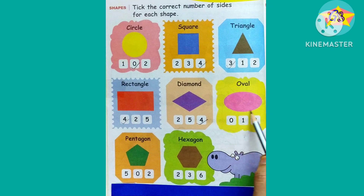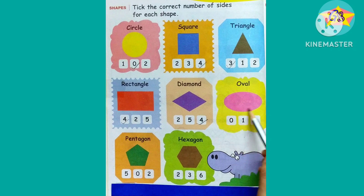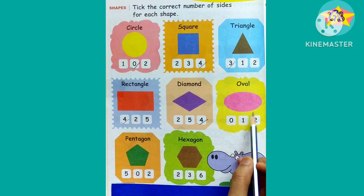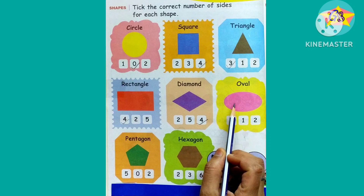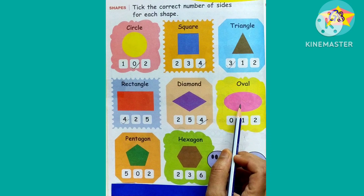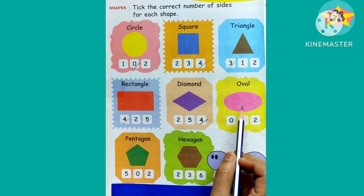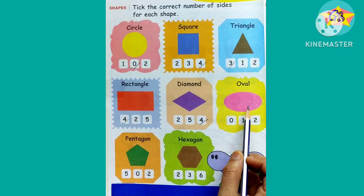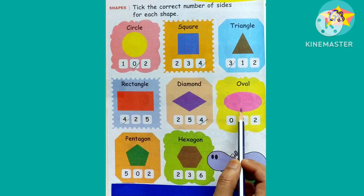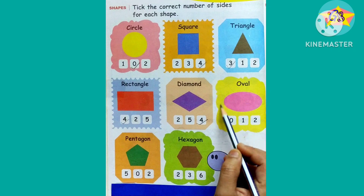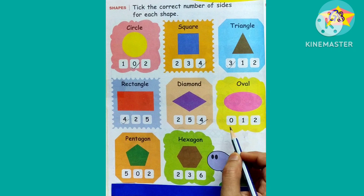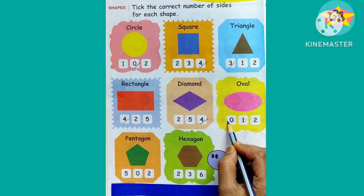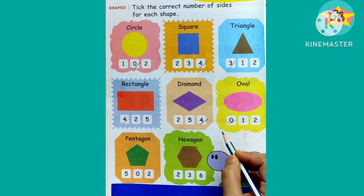This is an oval. Like the circle, the oval is also made of a curved line and has no sides. So we have to tick on the number zero.